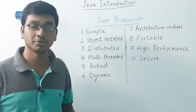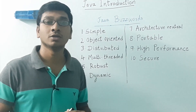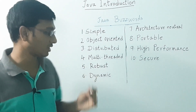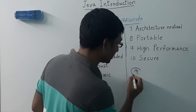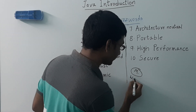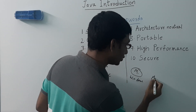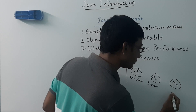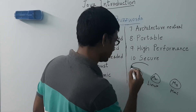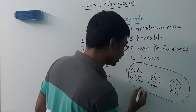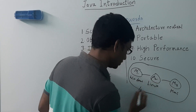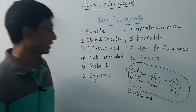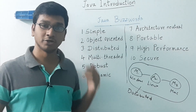Next: distributed. What are distributed systems? When we write an application, it might contain more than one module and each module can be on a different platform. For example, module one is on Windows, module two is on Linux, and another module is on Mac. This entire system we call a distributed system. Java was designed to work with distributed systems.